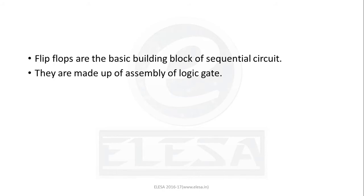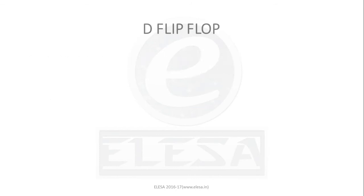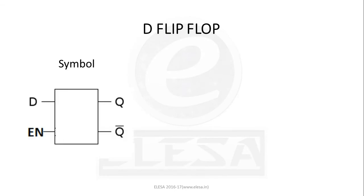The content of this session consists of D flip-flop, proceeding with T and JK flip-flop. Starting with the D flip-flop, this is the symbol of the D flip-flop. It is also called a D latch because we can construct a latch with a single input labeled as D for data. In addition to the D input, we have one more input called enable, with two outputs Q and Q bar, as shown in the symbol.